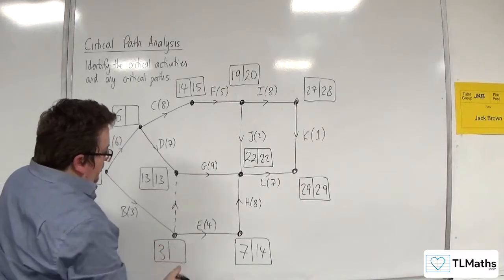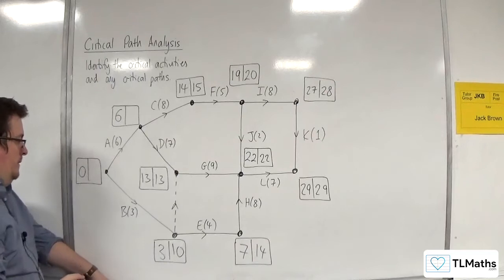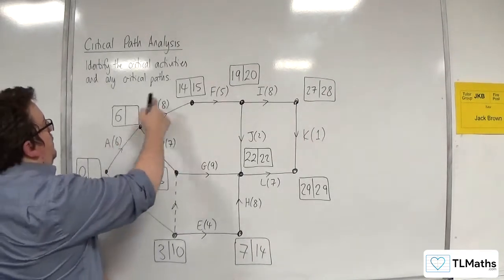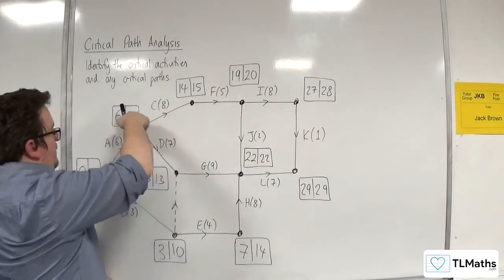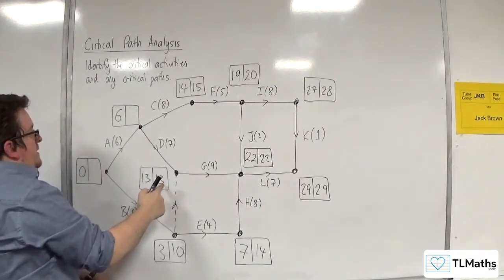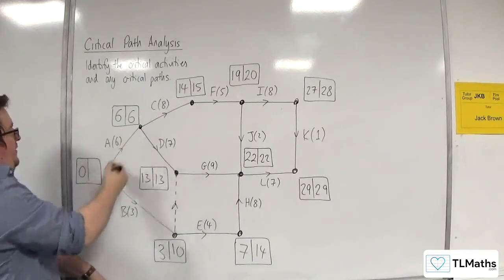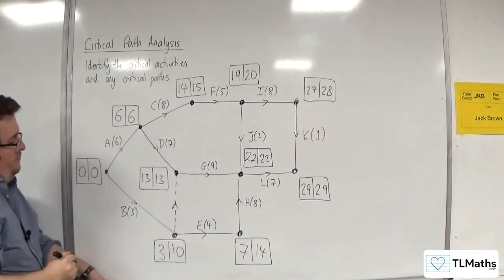So we take the smaller of those, so 10. Then for this one, we've got 15 take away 8, so 7, or 13 take away 7, which is 6. Then 6 take away 6 is 0.